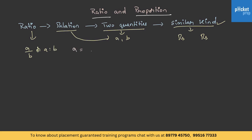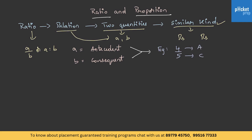Here A is the antecedent and B is the consequent. For example, 4 by 5 — here 4 is the antecedent and 5 is the consequent.